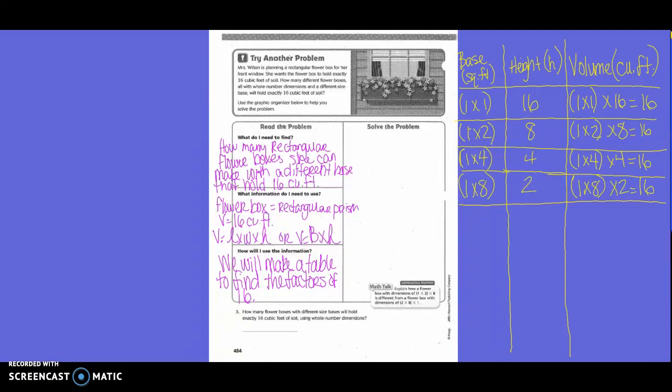How will I use the information? We will make a table to find the factors of 16. So we made our table. We have our base column, we have our height column, and we have our volume column. And then we started with the factors. 1 times 1 times 16 equals 16. 1 times 2 times 8 equals 16. 1 times 4 times 4 equals 16.